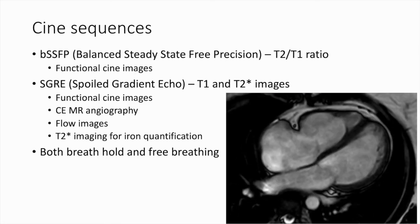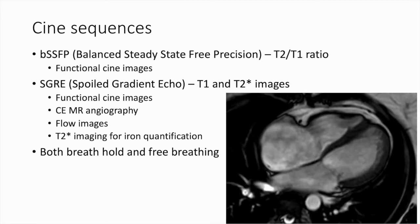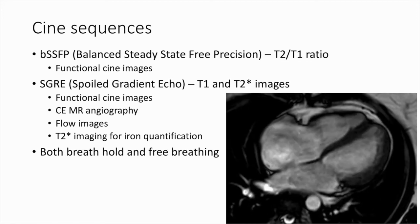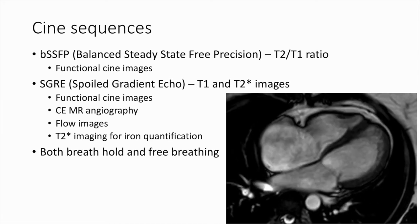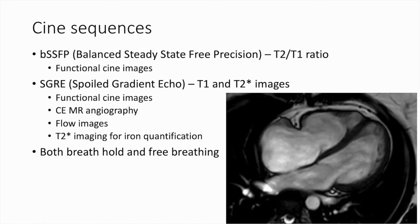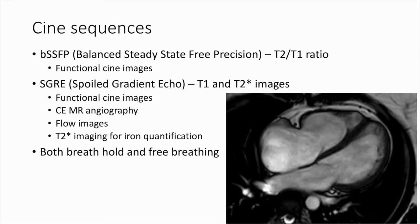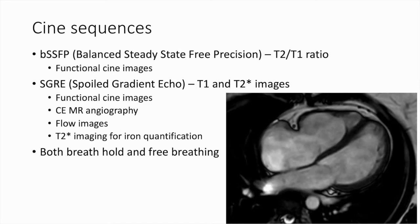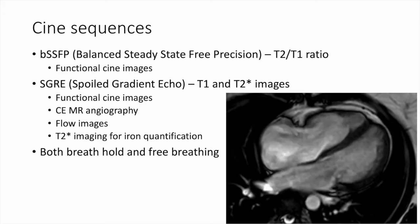Two types of gradient echo sequences can be used for cine images. The first is a balanced steady-state free precession sequence used for functional cine imaging, where tissue contrast is dependent on the T2/T1 ratio. The second is the spoiled gradient echo sequence, which can be used for functional cine imaging, contrast-enhanced MR angiography, flow images, and T2* imaging for iron quantification. Both sequences can be used as breath-hold as well as free-breathing sequences.